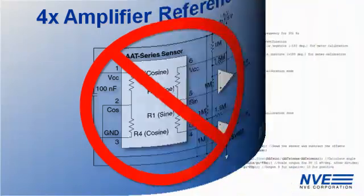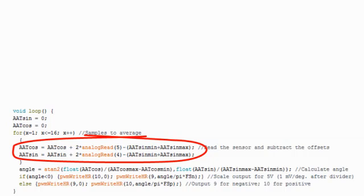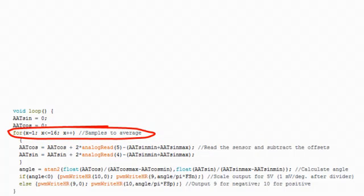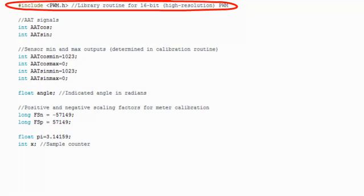We pick up resolution by using both the sine and cosine outputs in the calculation. Also, we're averaging several sensor measurements for each angle calculation to increase the effective resolution. For the output side, this library routine takes full advantage of the microcontroller's 16-bit timer counter for a high-resolution PWM output.